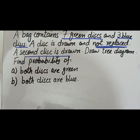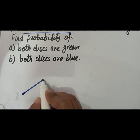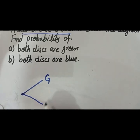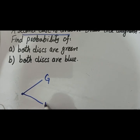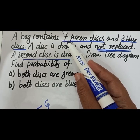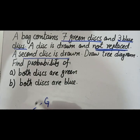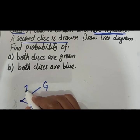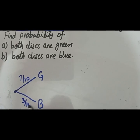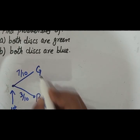A second disk is drawn. Let us move toward the tree diagram. For the first draw, we have green balls and blue balls. There were a total of seven green balls, and the total number of balls in the bag is seven plus three, which is ten. So the probability of a green ball is 7/10, and the probability of a blue ball is 3/10.